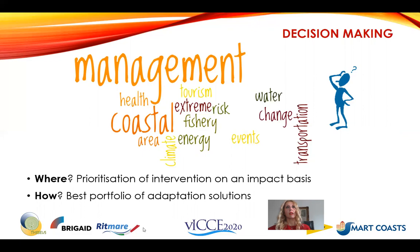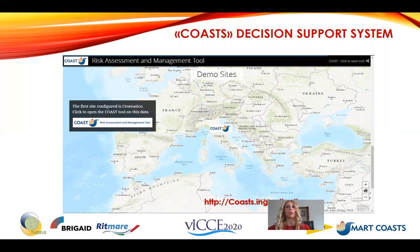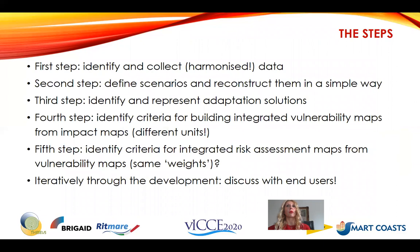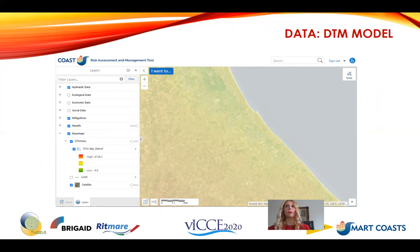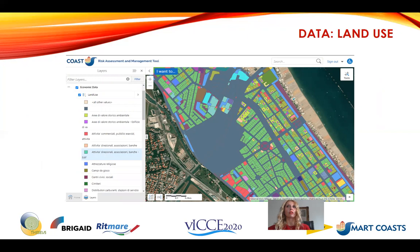I have been working within the Theseus and Brigade projects on a GIS-based decision support system to be delivered by the end of the year at costs.ing.unibo.it — the COSTS decision support tool. It has been scoped for Cesenatico, a seaside resort near Bologna, and users will be able to build their site by uploading any kind of data available across the web. The first step was to identify and collect harmonized data: a DTM model as accurate as possible, land use data covering recreational facilities, schools, factories, beaches, and so on.